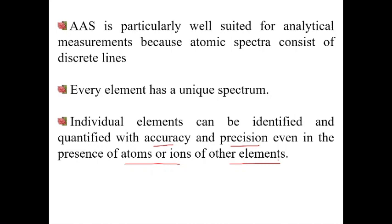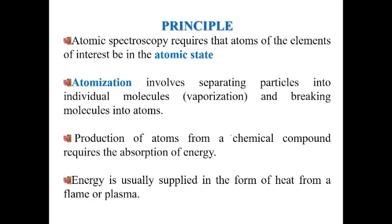The atoms of the element of interest must be in the atomic gaseous vapor state — this is the first criterion. Atomization involves particles being converted to molecules, then molecules being converted to atoms using suitable energy. Production of atoms from chemical compounds requires supply of energy, usually in the form of heat — either using a flame or a plasma. Plasma is the fourth state of matter, consisting of ionized gases and free electrons, with temperatures exceeding 10,000°C.